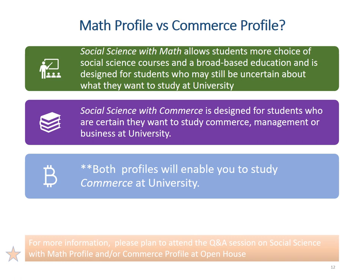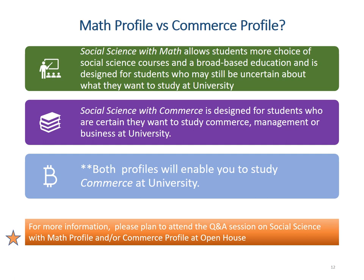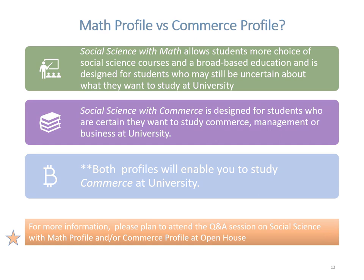Another common request is to compare and contrast the math and commerce profiles. In a few words, a math profile will get the student admitted to a math, actuarial science, or computer science related university program, whereas a commerce profile might not. However, both profiles will likely get the student admitted to a university program in business or commerce. Please plan to attend dedicated Q&A sessions covering each of those two profiles and check the college portal for upcoming session schedules.